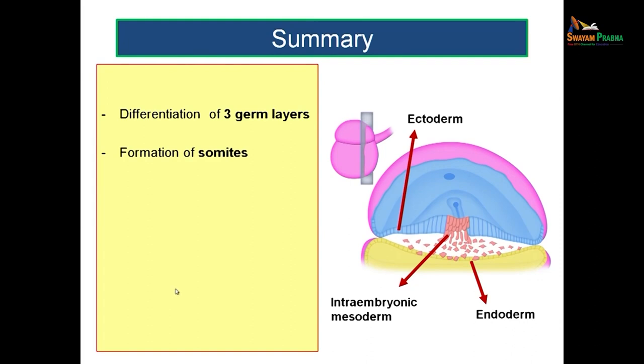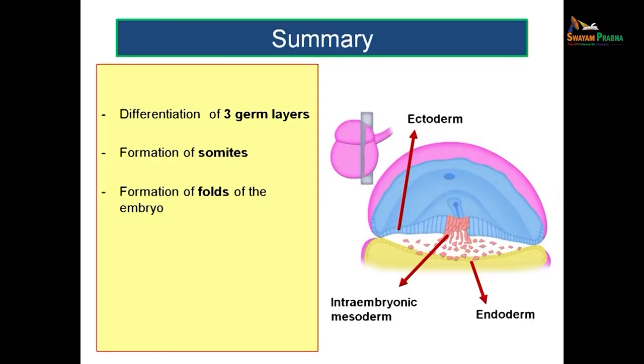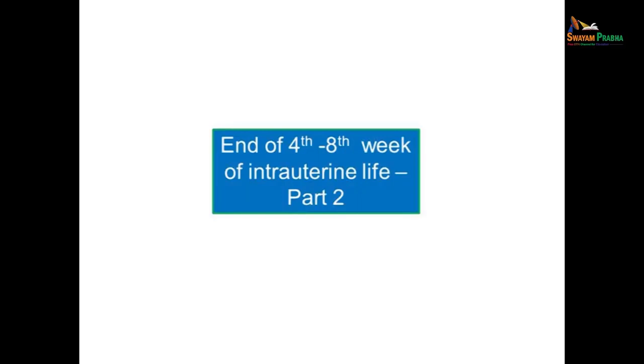To summarize this session, we have seen the differentiation of three germ layers — the derivatives of ectoderm, mesoderm, and endoderm — the major events during this period including the formation of somites, how the age of the embryo is referred to with respect to somite formation, the cephalocaudal and lateral folding, how cavities are formed with the help of folding, and the applied aspects mainly covering the neural tube defects occurring during the 4th to 8th week of intrauterine period. Thank you.